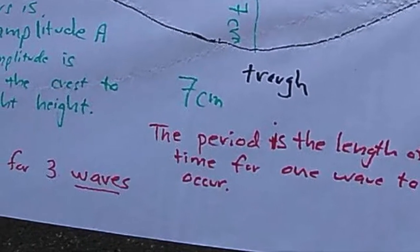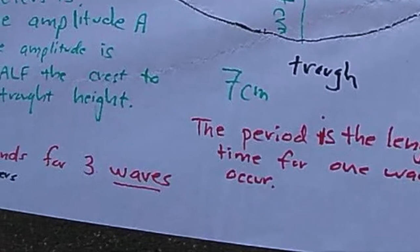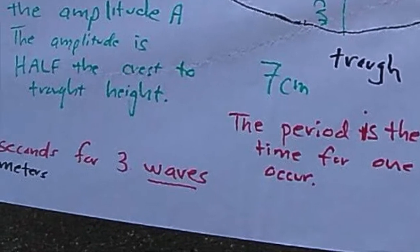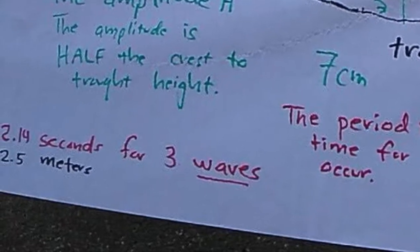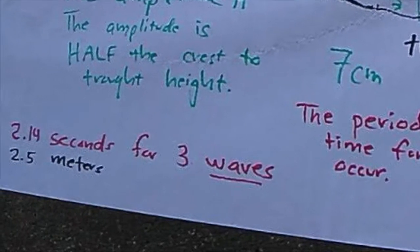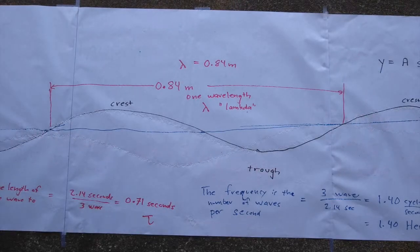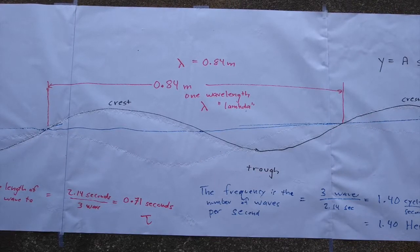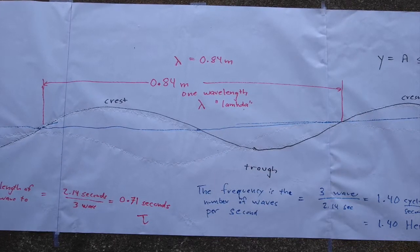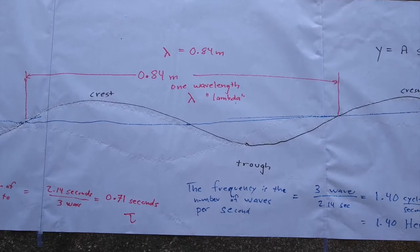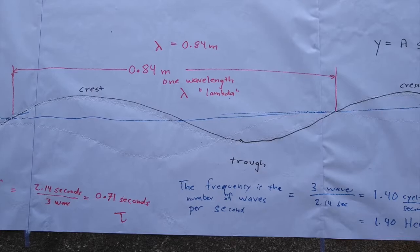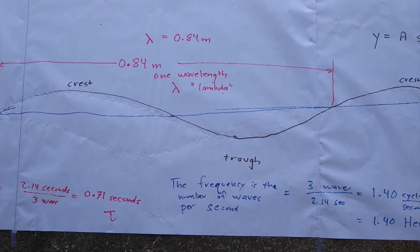The period is the length of time for one wave to occur. It took 2.14 seconds for three waves. And that is the period. The period is the length of time for one wave to be laid down by the board. The period is a measure of time.